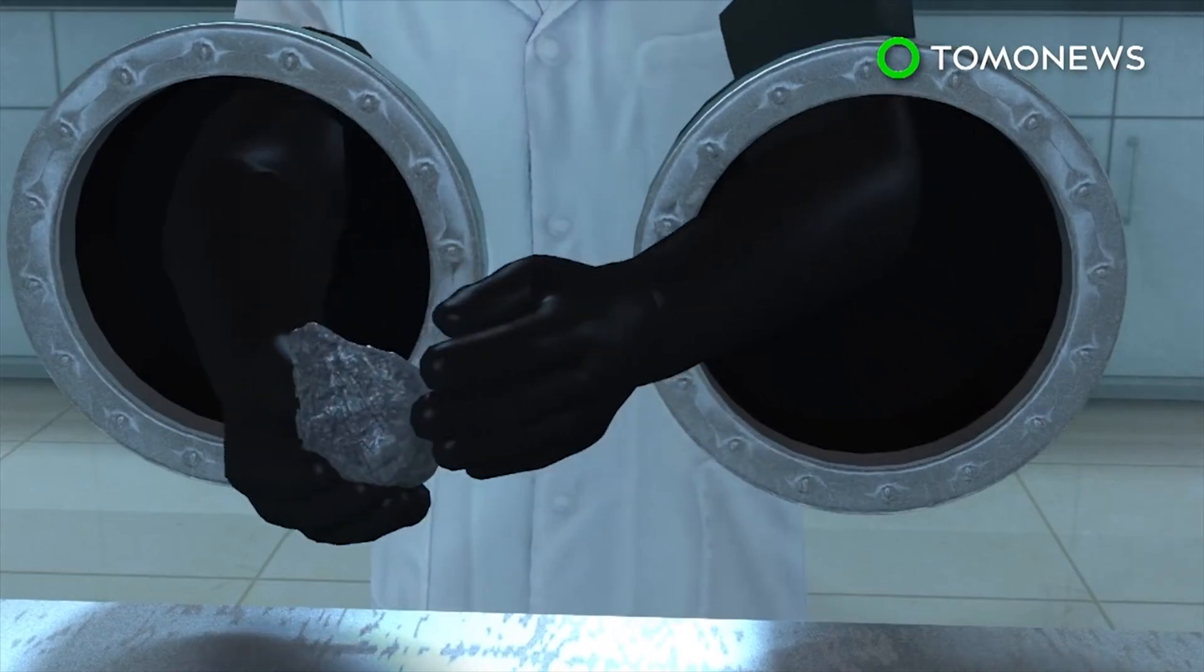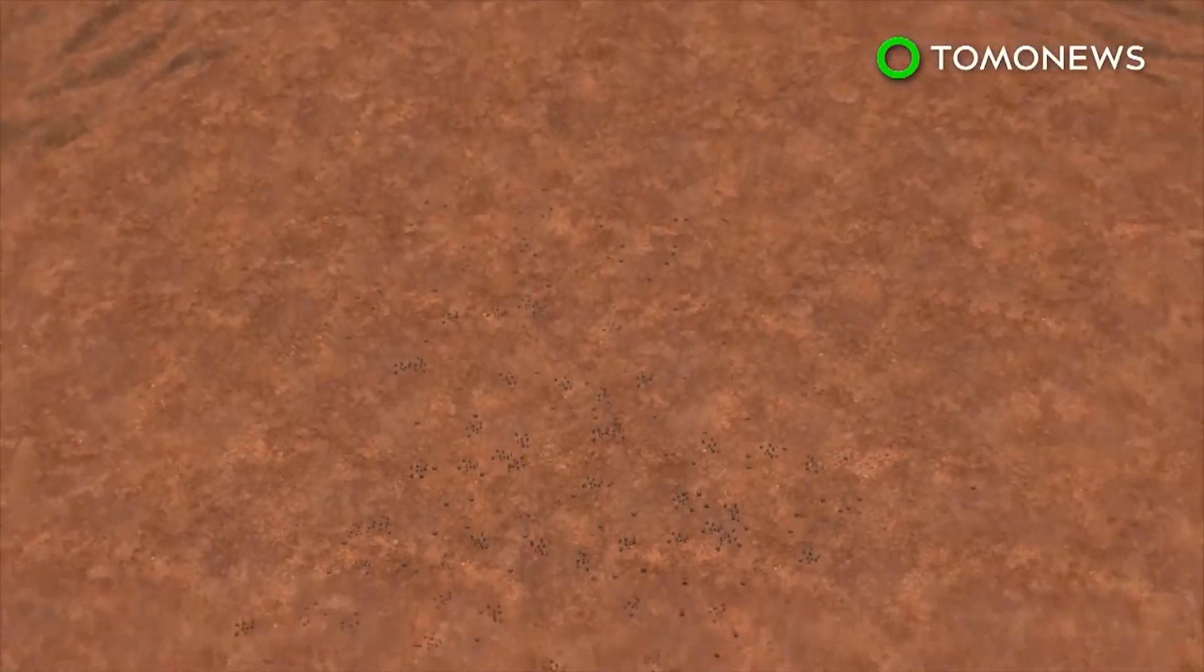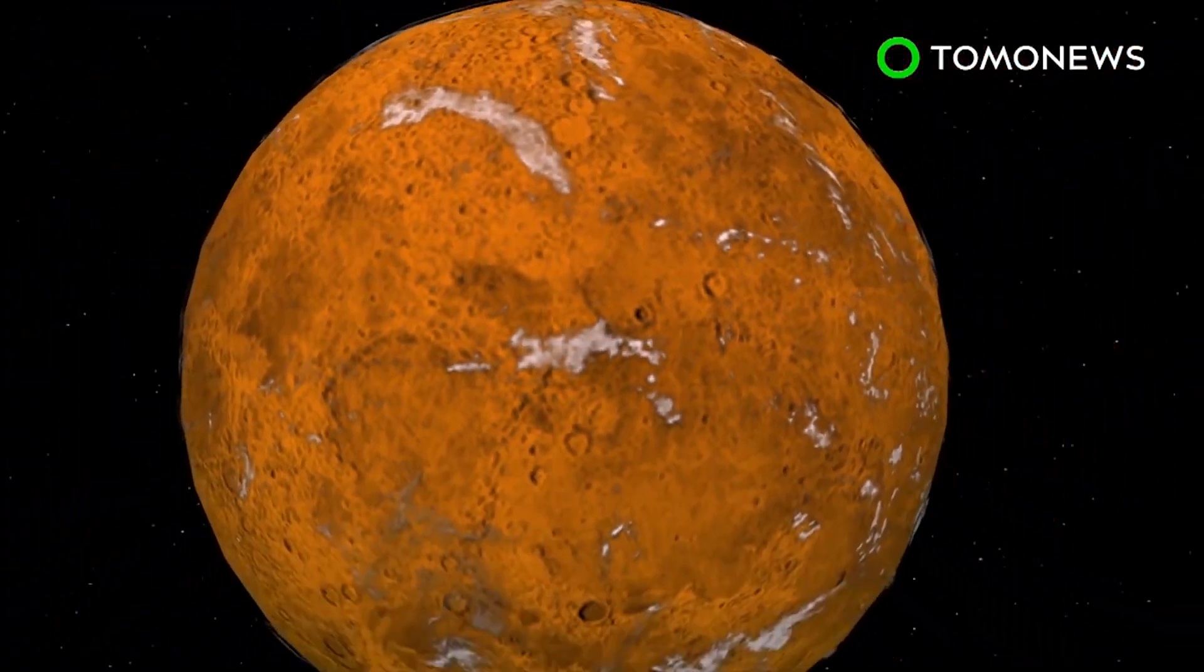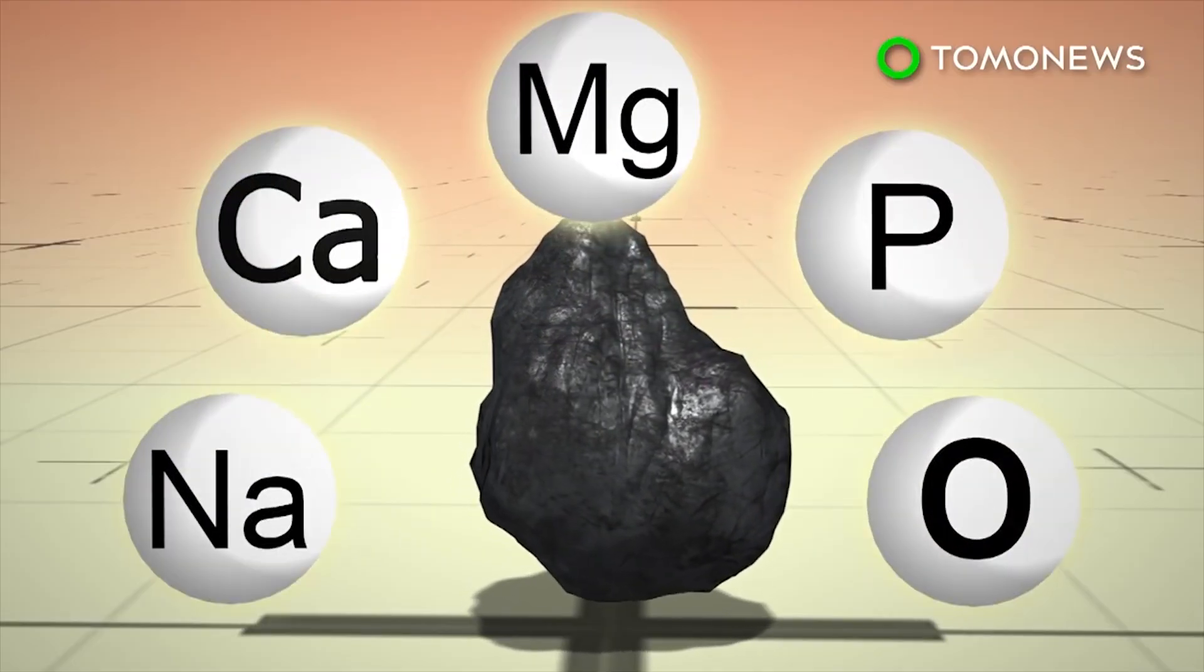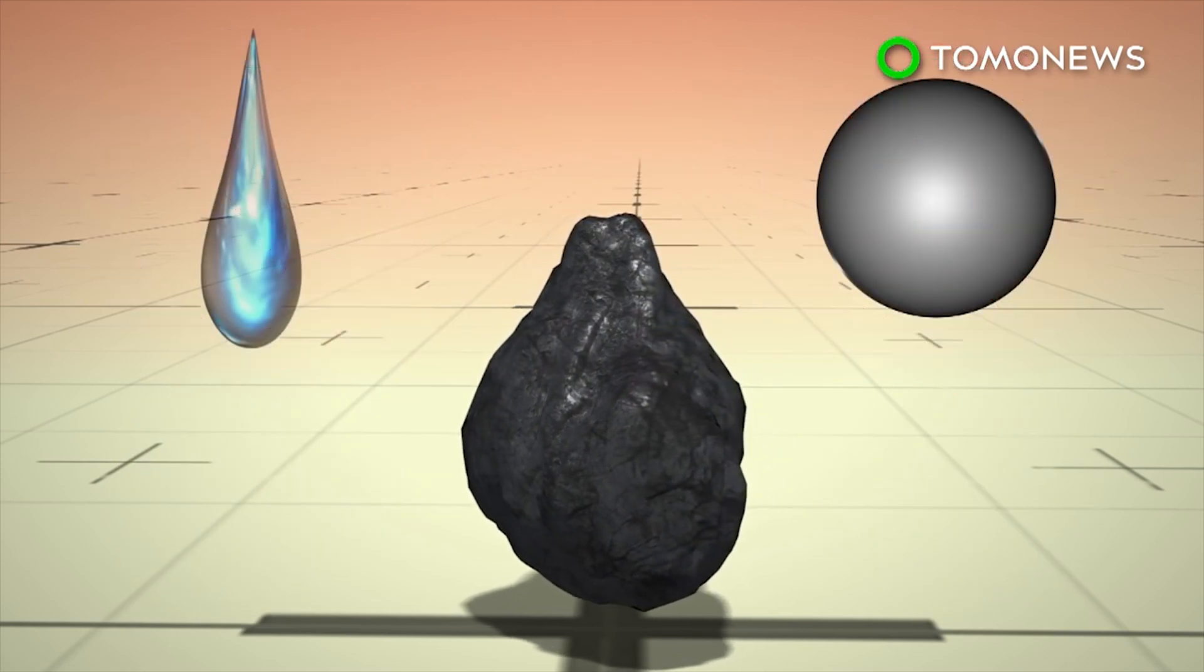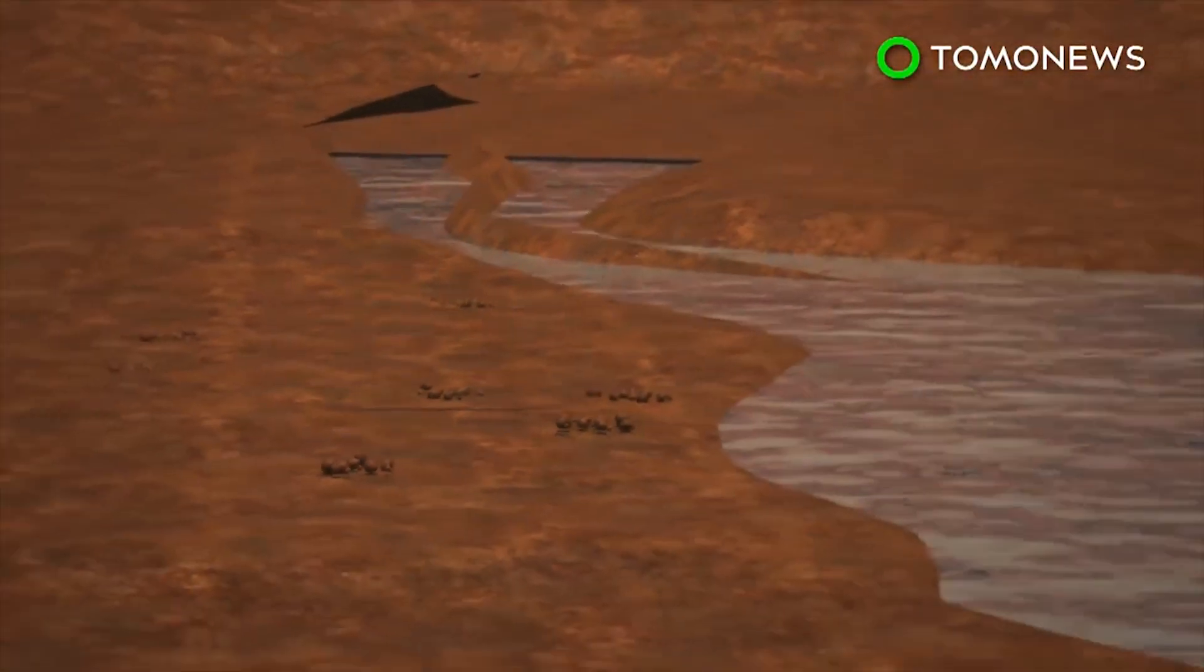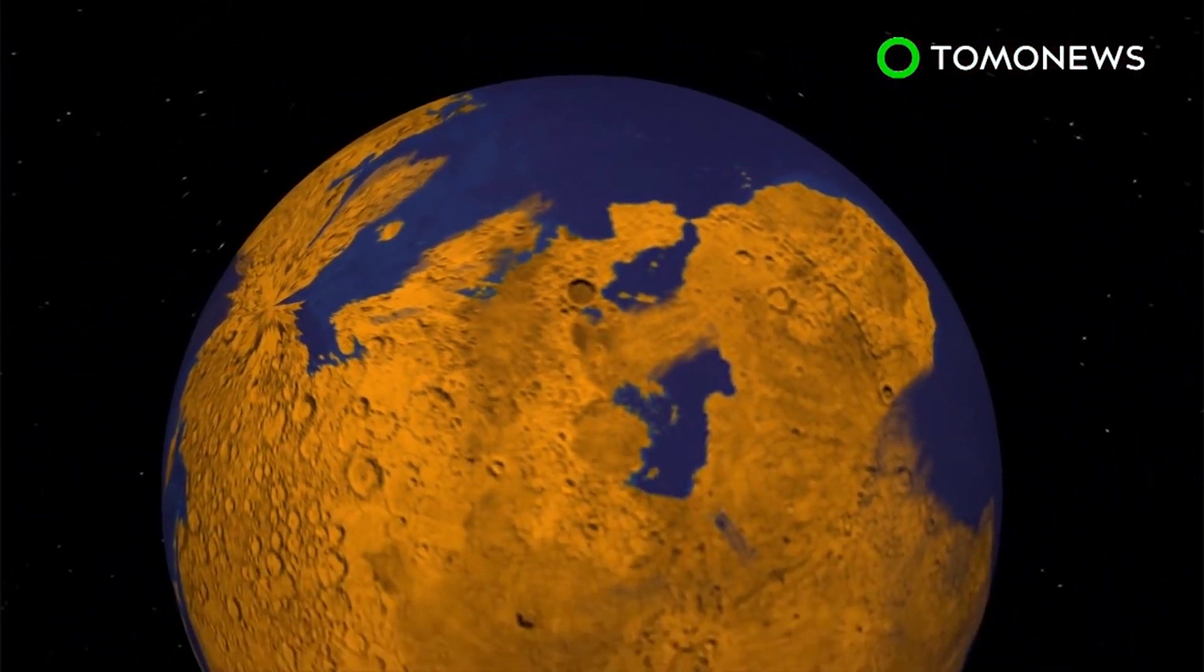Martian meteorites contain a specific mineral that has long led scientists to believe the planet had an ancient dry environment. The mineral, called merolite, contains no water or hydrogen, which led to the assumption that its origins were likewise devoid of liquid. But new research now suggests that merolite was originally a hydrogen-containing mineral and that Mars may have had a more water-rich history.